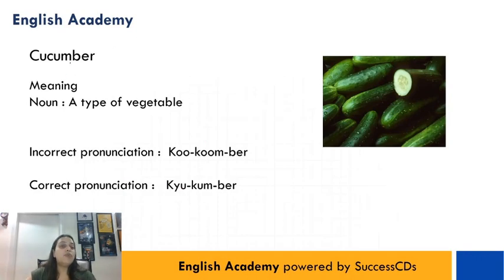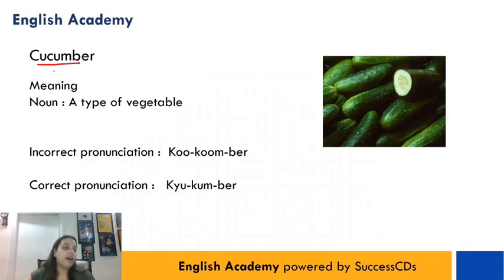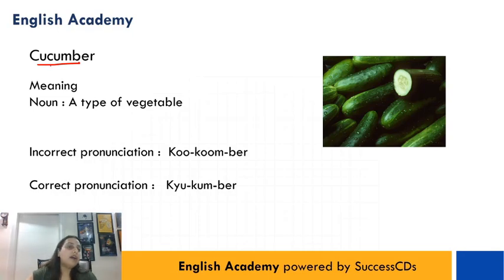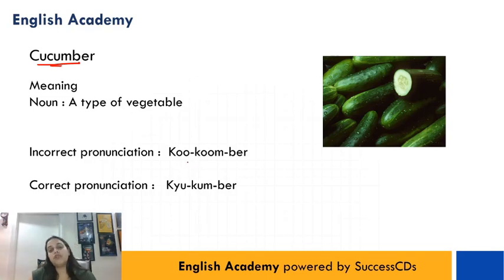The next word is C-U-C-U-M-B-E-R. Log isko usually pronounce karte hain 'cucumber', but iski correct pronunciation is 'cucumber'.